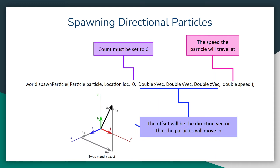In order to actually spawn in directional particles we have to do a few things to our spawn particle method. First off we have to make sure we have the count set to zero, and then we will have our X, Y, and Z offset — we'll use this to actually create the directional vector. One way to think of this is if you have your origin at 0, 0, 0 and then you create another coordinate at this X, Y, and Z offset variable location, and you just create a line that moves from the origin at 0, 0, 0 to that point.